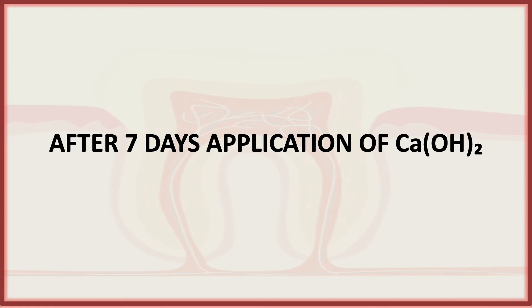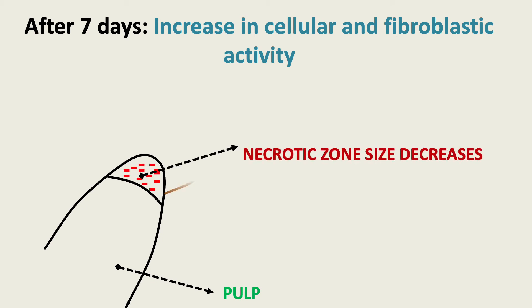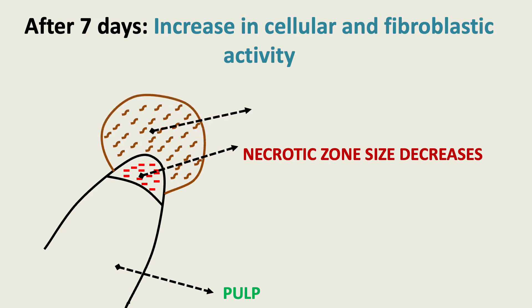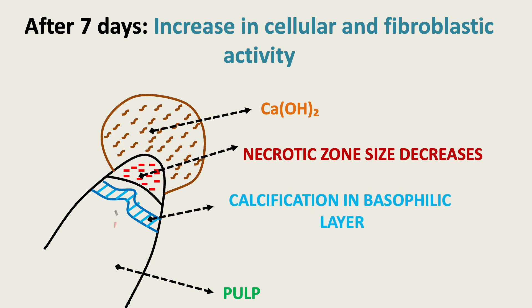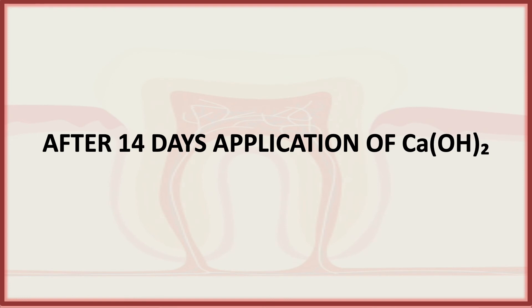After seven days of application of calcium hydroxide, there is an increase in cellular and fibroblastic activity. As we know, this is pulp; this is calcium hydroxide. After seven days, the necrotic zone size decreases and there is calcification in the basophilic layer, as you can see in the figure, and migrating fibroblasts are visible.